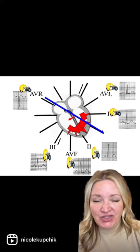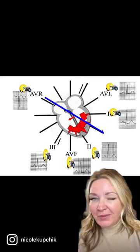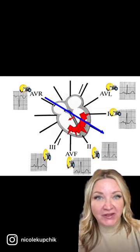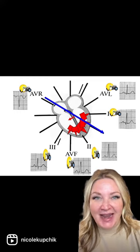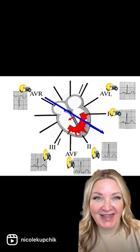Leads 2, 3, and AVF all look at the heart from the general direction of the left leg. So in that case, the R wave in leads 2, 3, and AVF is going to be upright. That's normal.